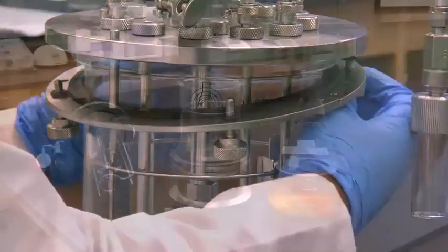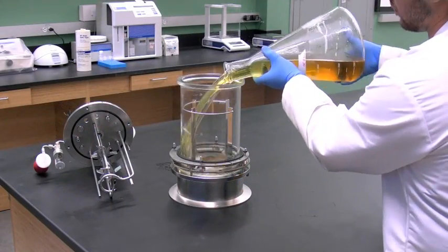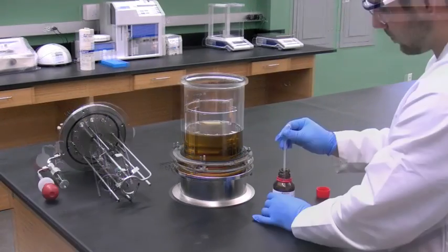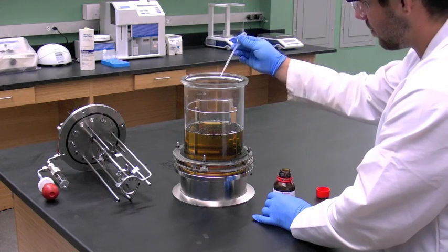Remove the head plate by loosening the screws and empty the flask of medium solution into the fermenter. Add two drops of anti-foam.